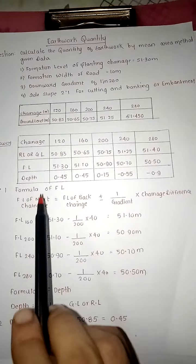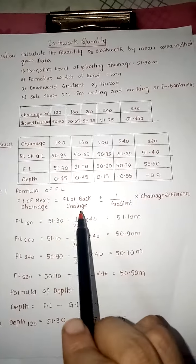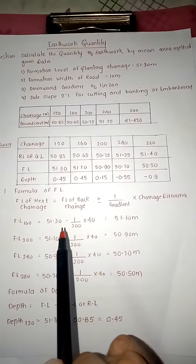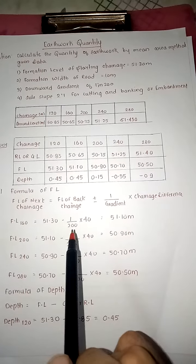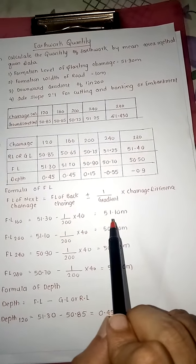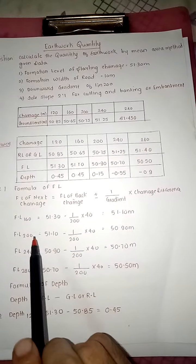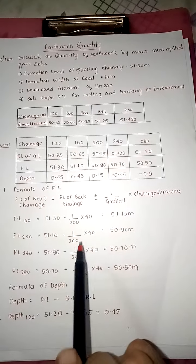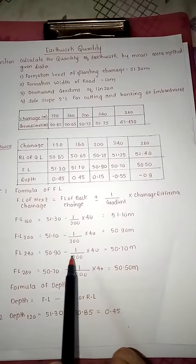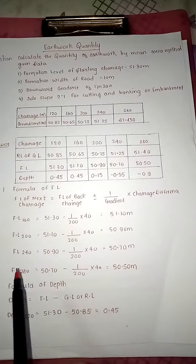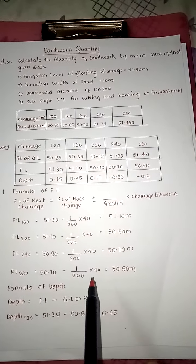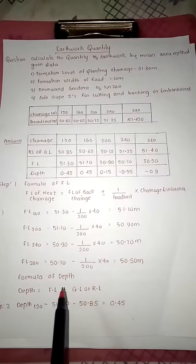FL of 120 is given as 51.30. FL of 160: back chainage FL is 51.30 minus 1/200 times 40 (difference between 120 and 160), answer is 51.10 meter. FL 200 = 51.10 - 1/200 × 40 = 50.90 meter. FL 240 = 50.90 - 1/200 × 40 = 50.70 meter. FL 280 = 50.70 - 1/200 × 40 = 50.50.